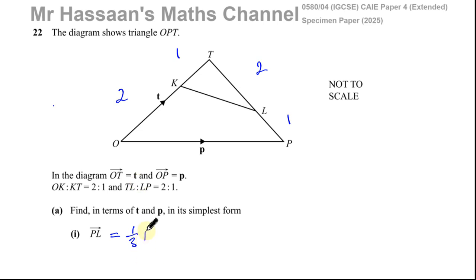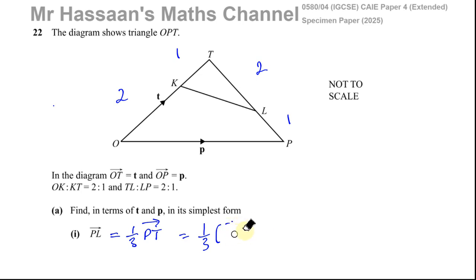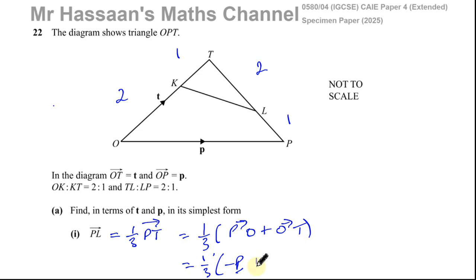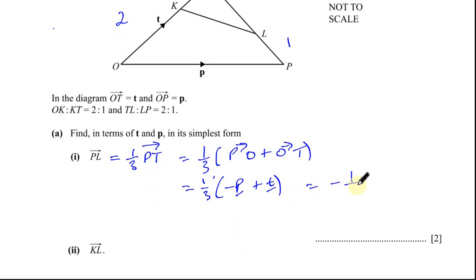So P to L is one third of P to T. To go from P to T we go P to O plus O to T, which is minus p plus t. So that's a third of P to O plus O to T. P to O is negative p, so we have a third times negative p plus t. Our answer is minus one third p plus one third t, or equivalently one third t minus one third p. Both of those are correct.